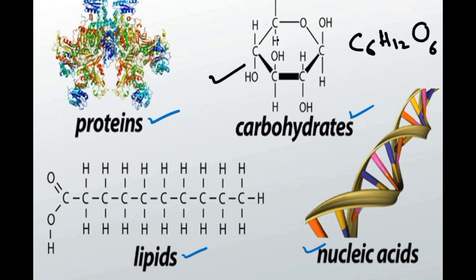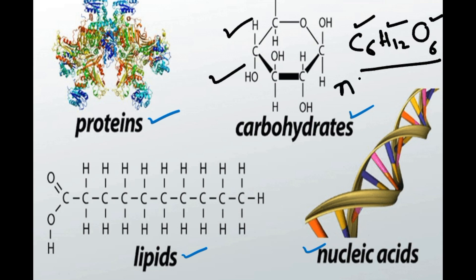For example, if we take carbohydrates — we have glucose, C6H12O6. We study its structure, and its composition: six atoms of carbon, twelve atoms of hydrogen, and six atoms of oxygen. When carbohydrates react in our body, we get ATP — adenosine triphosphate — which is the source of energy.